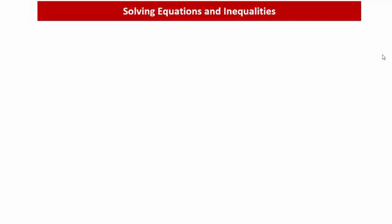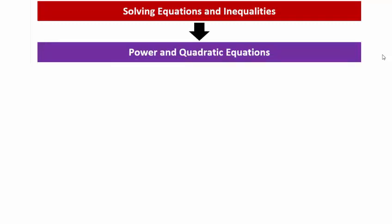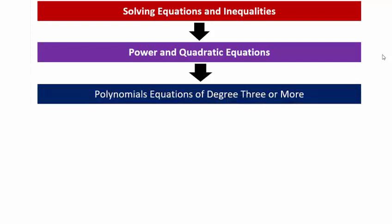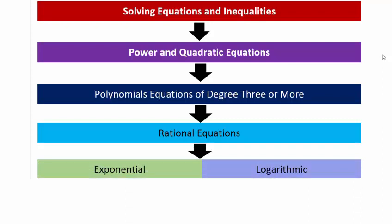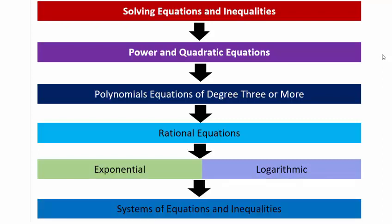Remember, we talked about what it means to solve an equation — you have to undo. If you have powers, you undo with radicals. If you have radicals, you undo with powers. For inequalities, we saw the test point method for linear or nonlinear inequalities. We will use the zero product property for power, quadratic, and polynomial equations. We will undo rational equations by taking a common denominator, and solve exponential equations using logarithmic functions and vice versa. Finally, we will look at solving systems of equations and inequalities.